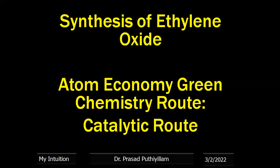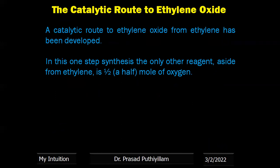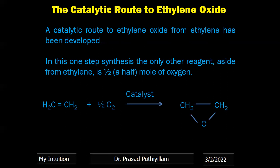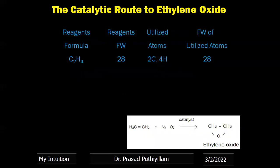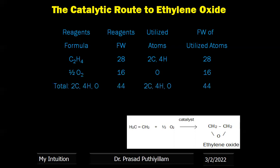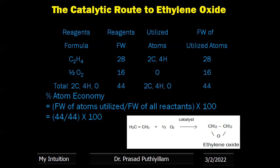Then we check the synthesis of ethylene oxide by the catalytic route. In the catalytic route, a single-step reaction has been developed in which ethene is directly made to react with half a mole of oxygen (½O₂) in presence of a suitable catalyst to give ethylene oxide. The formula weight of the reagents: ethene (28) is fully utilized, and ½O₂ is also fully present in the product. Total formula mass = 44, product formula mass = 44. Therefore, percentage atom economy = 44/44 × 100 = 100%. The catalytic route gives 100% atom economy — maximum yield with no wastage of any chemical.